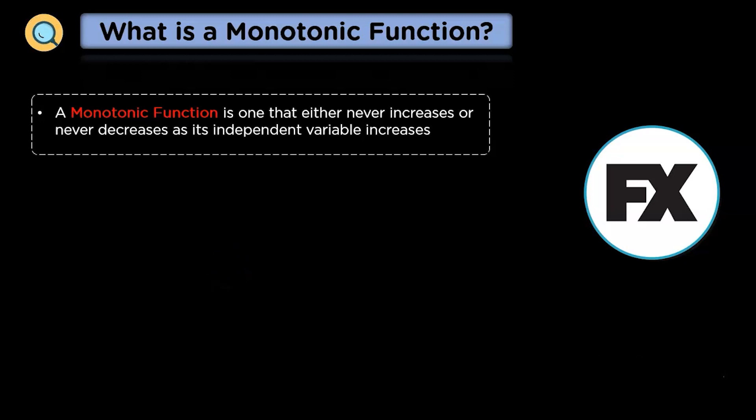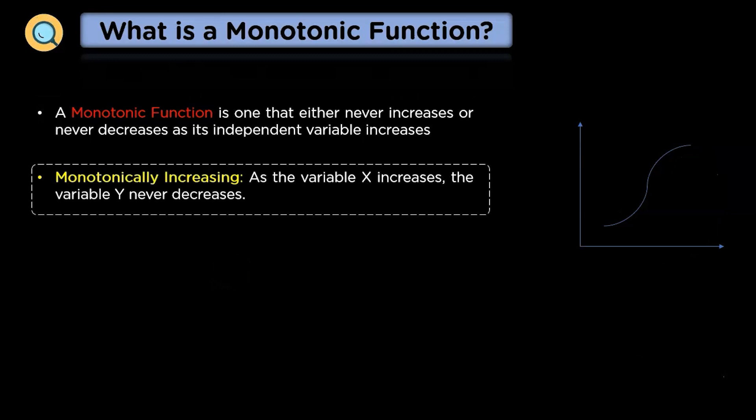Now let's discuss three types of monotonic function. Monotonically increasing: In this function, as the variable x increases, the variable y never decreases, as seen in the graph.